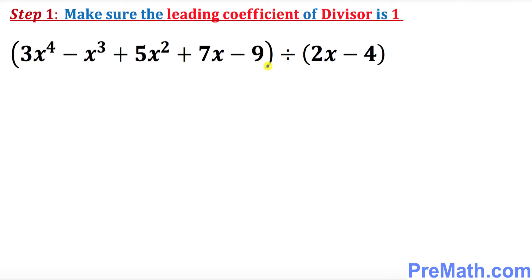So the very first step is to make sure that the leading coefficient in our divisor must be 1. Over here you can see our leading coefficient is 2. How can we make it 1? By just dividing by 2 across the board over here. Divide this one by 2 and this one by 2. 2 over 2 becomes 1x minus 2.